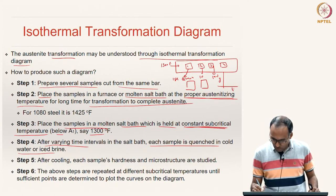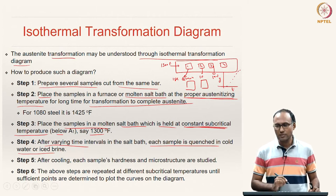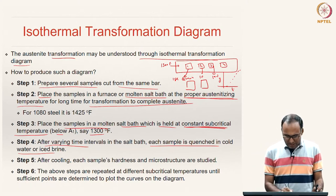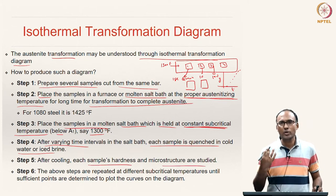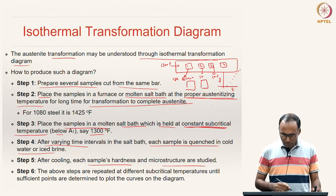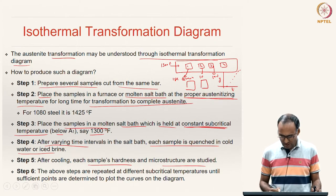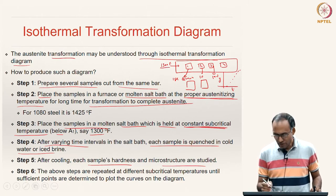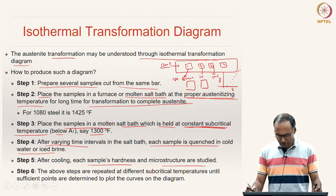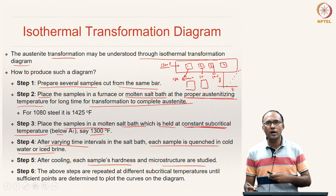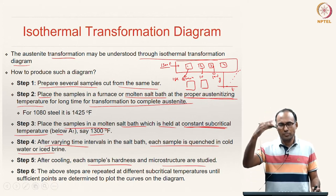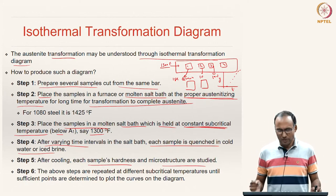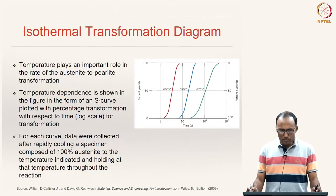This gives you data points that form an S-curve. After quenching, each sample's hardness and microstructure are studied so you can report both. Repeat this process at 1200°F and as many other subcritical temperatures as needed in order to understand the complete transformation behavior across the full subcritical temperature range.